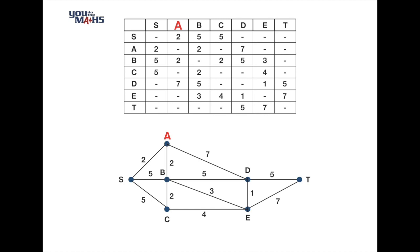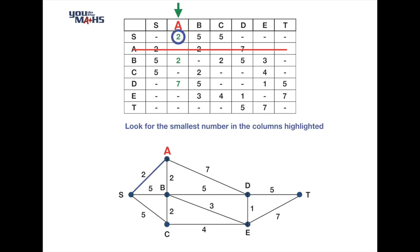In Prim's algorithm, we first rule out row A, because the numbers in row A are identical to those in column A — we only look at columns. Column A has lengths of 2, 2, and 7, and we aim to choose the smallest value. We have a tie, so we choose the 2 connecting to vertex S. The edge between A and S is highlighted as our first choice in the minimal spanning tree.